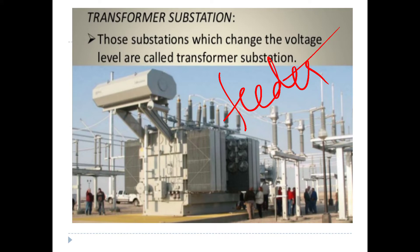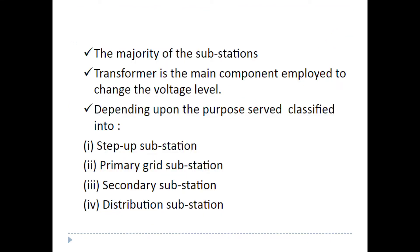First one: Transformer Substation. Those substations which change the voltage level are called Transformer Substations. We have a substation line which is a feeder. There are 3 phases R, Y, B. The first type uses 1-2-3 kV or 3-3 kV. If you change the transformer substation, the first change is to the voltage. We have different types: step-up substation, primary grid substation, secondary substation, and distribution substation.